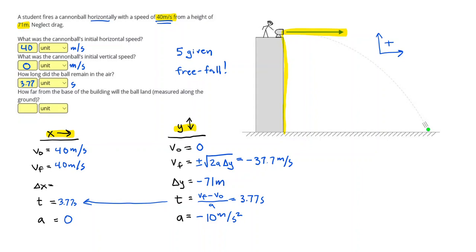And if my speed is constant, to find the displacement, I can just do that constant speed times the time. Or 40 times 3.77, which gives me 151 meters.